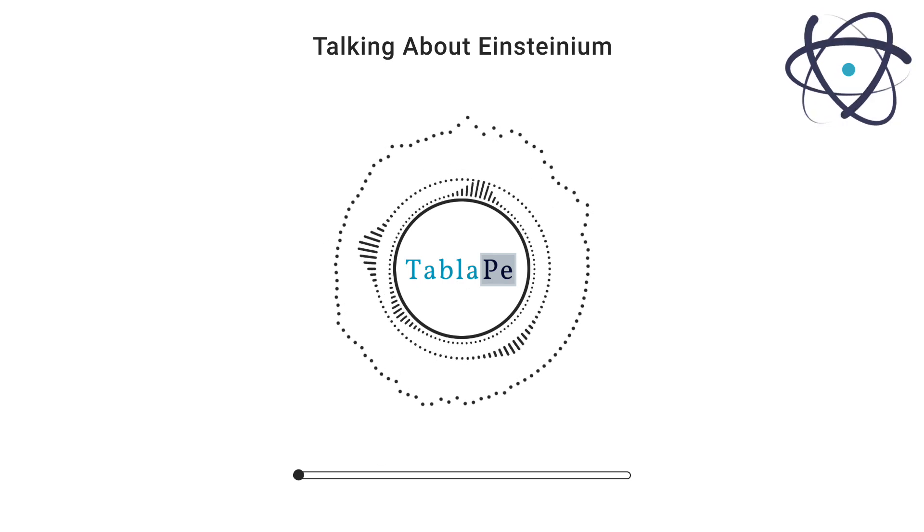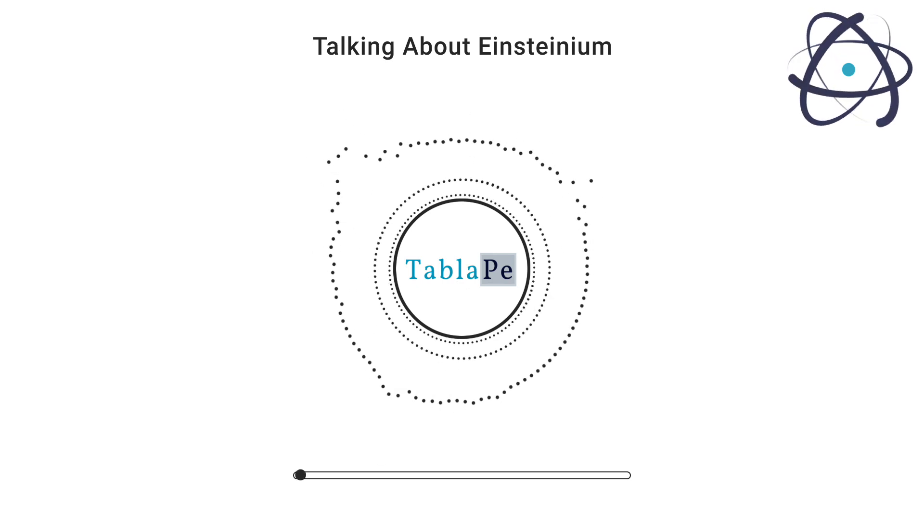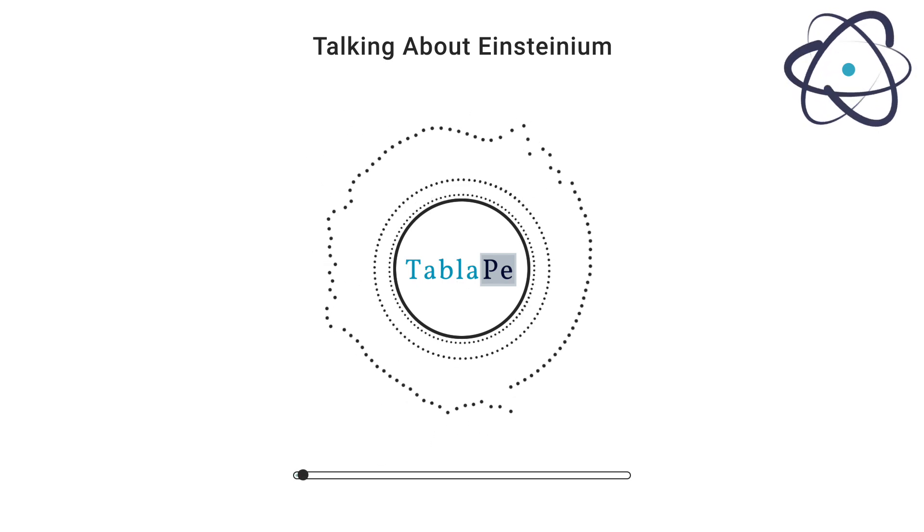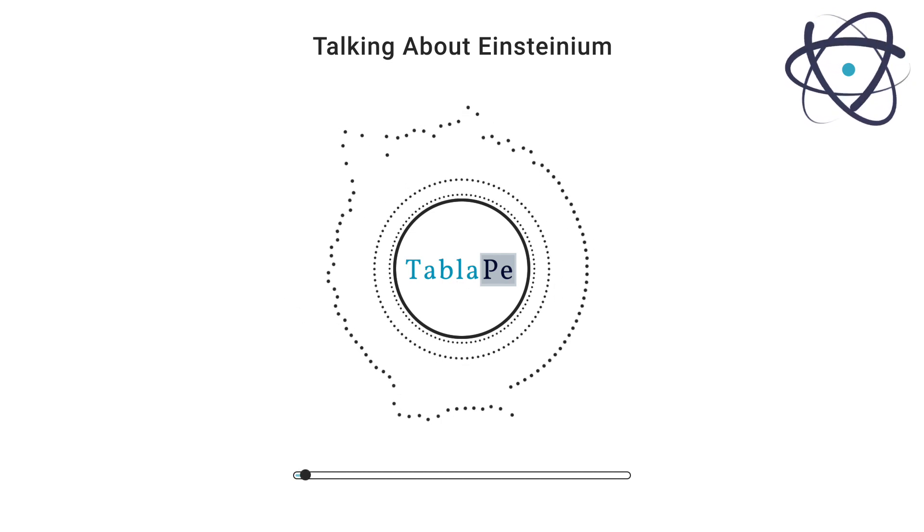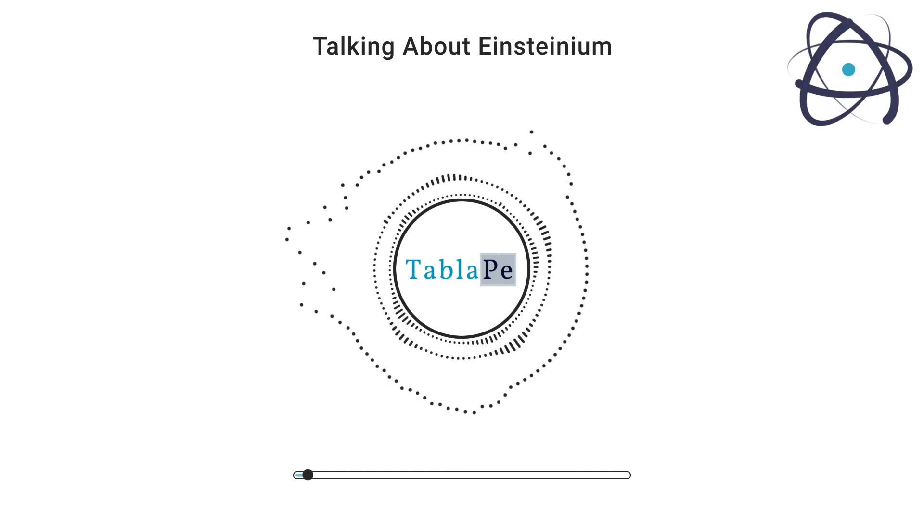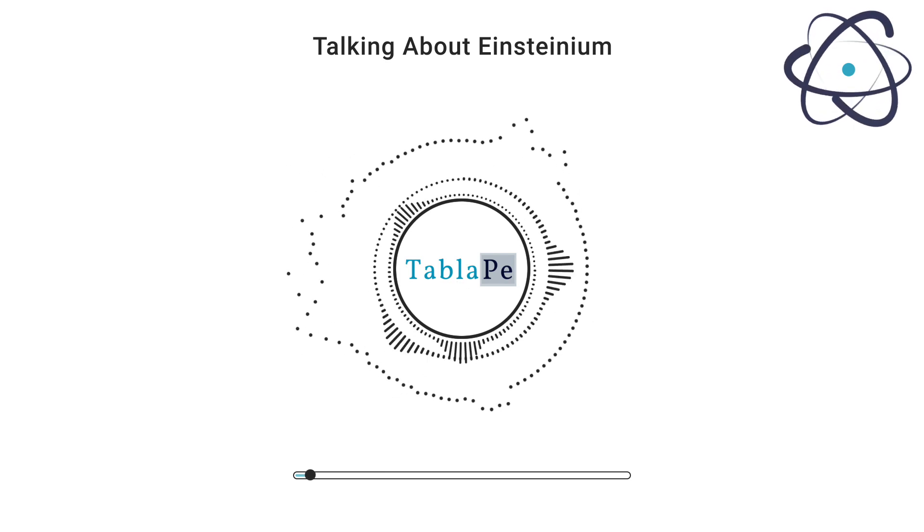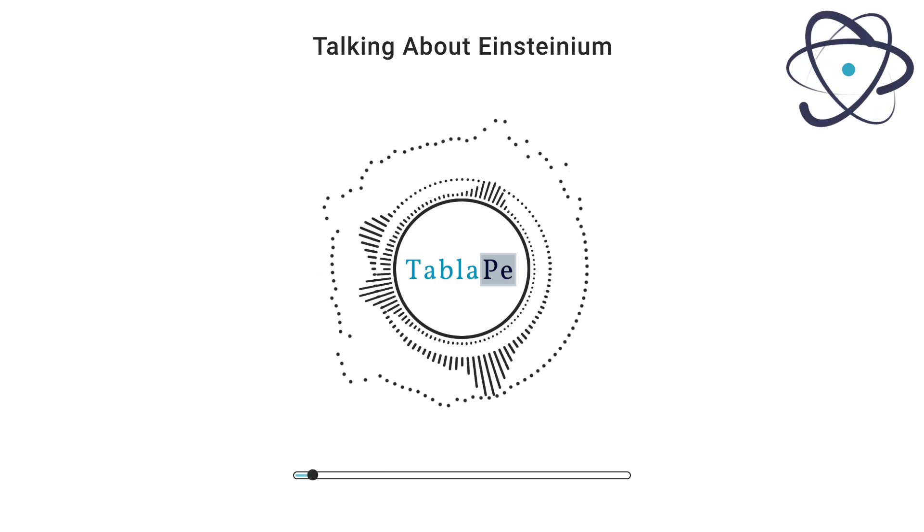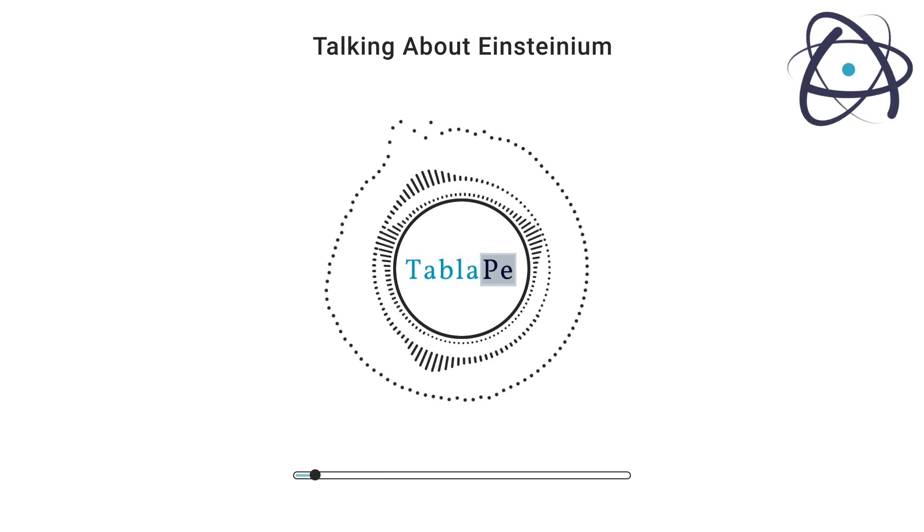Welcome to another episode of Talking About Elements, the podcast that embarks on a journey through the captivating world of chemical elements. In today's episode, we're diving into the story of Einsteinium, an element named after one of the greatest minds in the history of science.